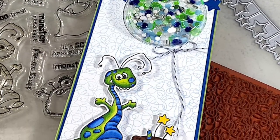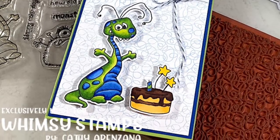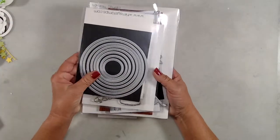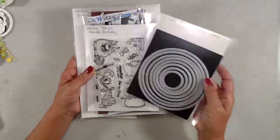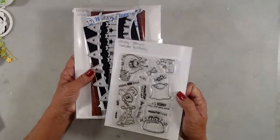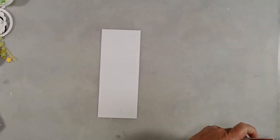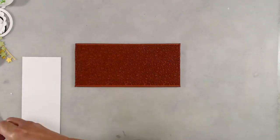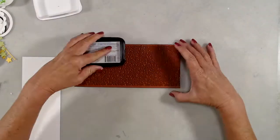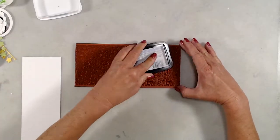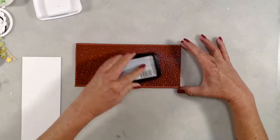I'll be using the stitched and pierced circle die, the Monster Birthday stamp set, the slimline bunting die set, and the Scribbles background stamp. I inked up the background stamp with a very light blue ink.